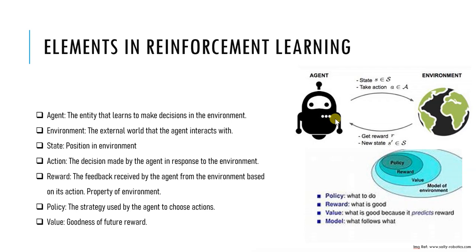Now, policy tells us what to do next. The policy is like a method used to map the agent state to action. It is a set of rules that the agent has to follow to determine the appropriate action to be taken based on the current state. The policy can be deterministic or stochastic, depending on whether the same state always maps to the same action or not.